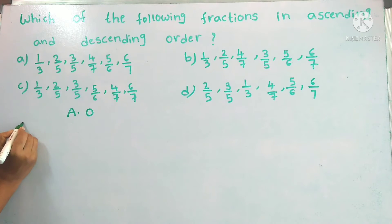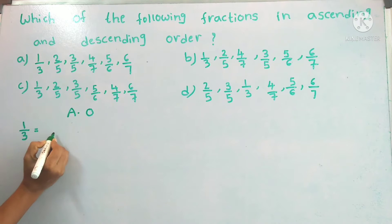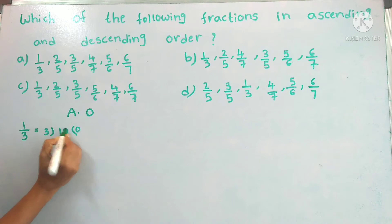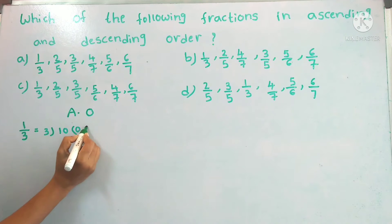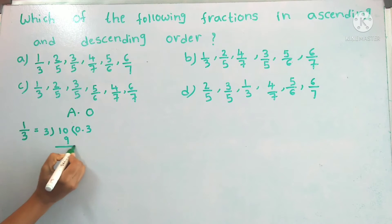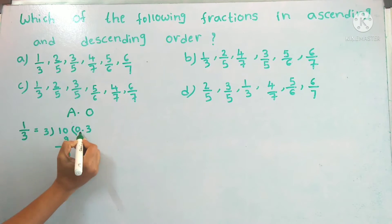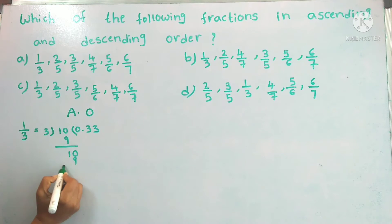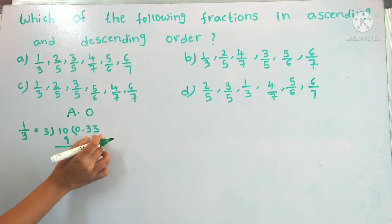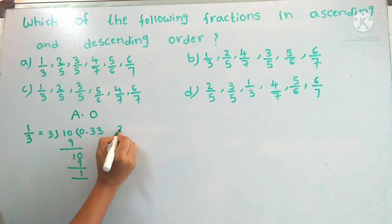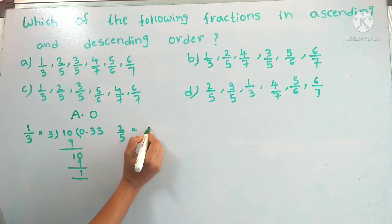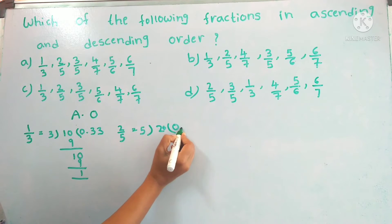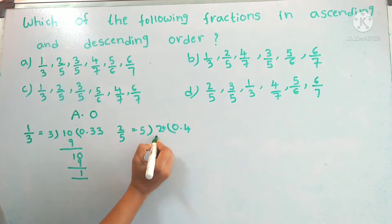Let's take option A. The first fraction is 1 by 3. Let's divide: 1 divided by 3 equals 0.33 (remainder 1, repeating). So 1 by 3 equals 0.33. Now let's take the second fraction: 2 by 5. Dividing gives us 0.4, so 2 by 5 equals 0.4.